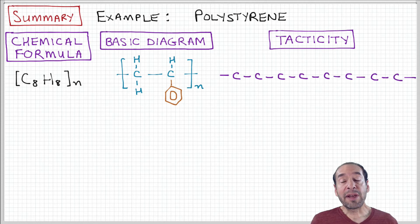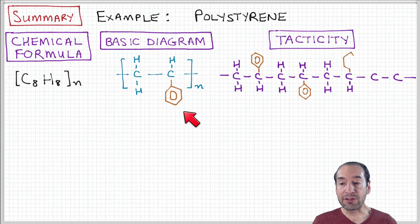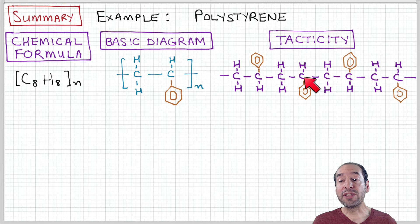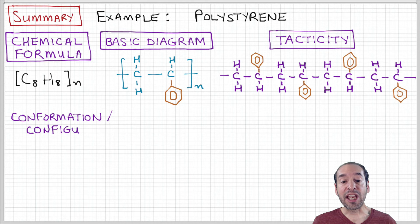Then we talked about higher levels of detail in terms of how these side groups are positioned. So we could talk about tacticity, which deals with whether these are distributed in a regular pattern, either on one side of the backbone or on alternating sides of the backbone, or whether they're randomly distributed along the length of the chain.